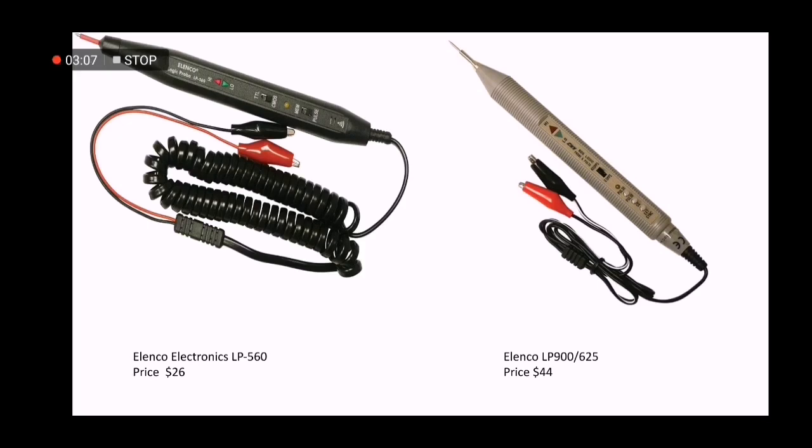The second one is Elenco LP900 logic probe and pulser, which is $44. This two-in-one logic probe and pulser simplifies the troubleshooting and analyzing of digital circuits. Frequency response is 50 MHz, detectable pulse width is 10 nanoseconds. Ideal for use in labs, service shops, schools, home, and industry.